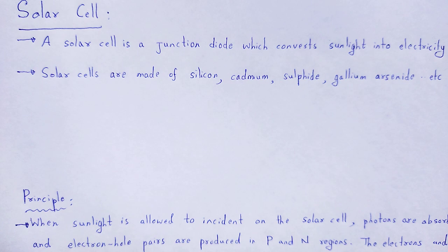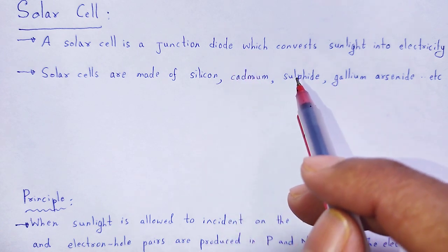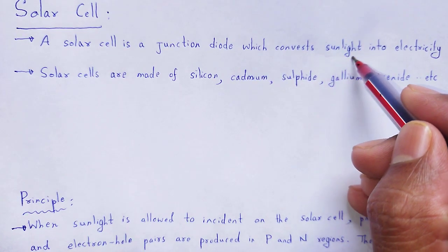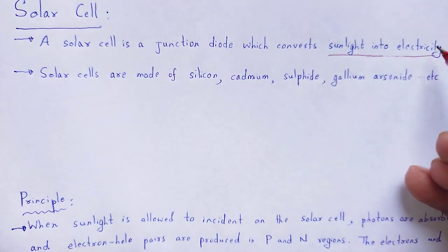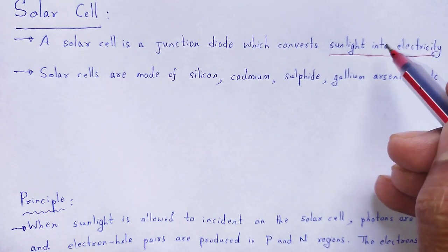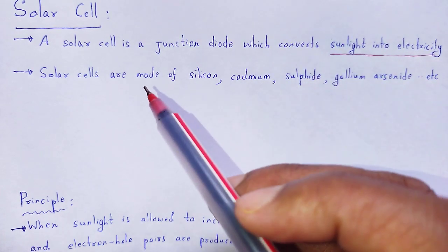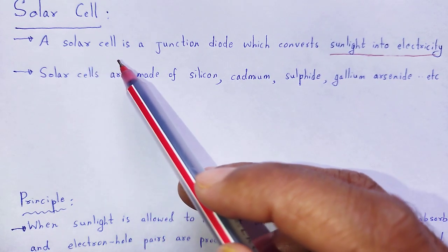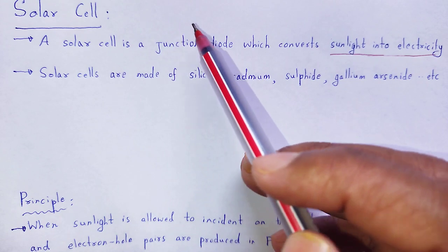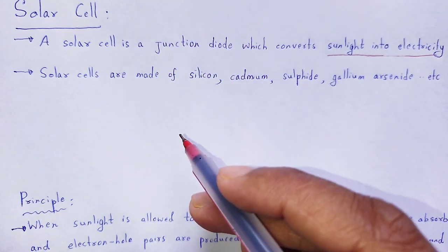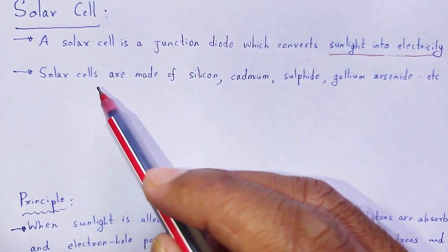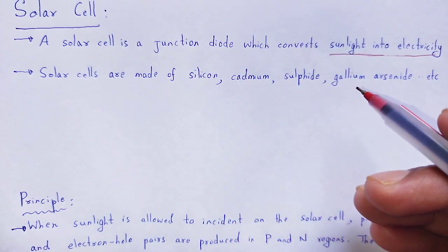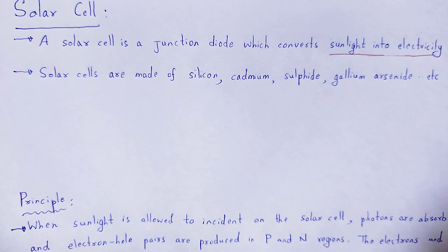A solar cell is a junction diode which converts sunlight into electricity. We can get electricity from sunlight by using a device — that is the solar cell — which is a junction diode. Solar cells are made up of silicon, cadmium sulphide, gallium arsenide, etc.